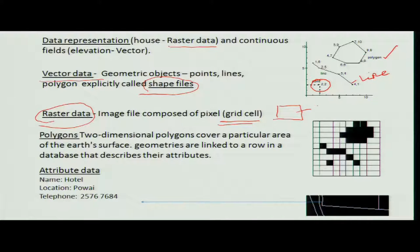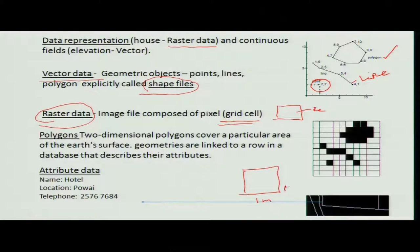A field seen as a raster file will be represented where the pixel size corresponds to the ground resolution — for example, 1 meter by 1 meter on the ground. That is what we call raster data. There are certain advantages and disadvantages to raster images which will be discussed later.